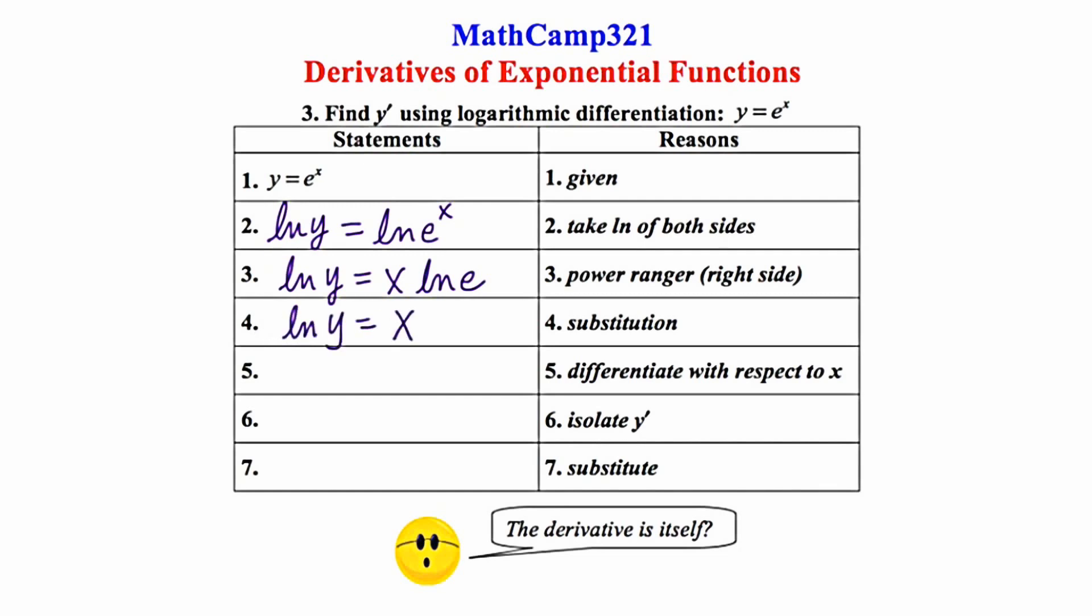In step 5, it says to differentiate with respect to x. So on the left-hand side, I'm going to take the derivative of the natural log of y. This places the argument in the denominator, and its derivative in the numerator.